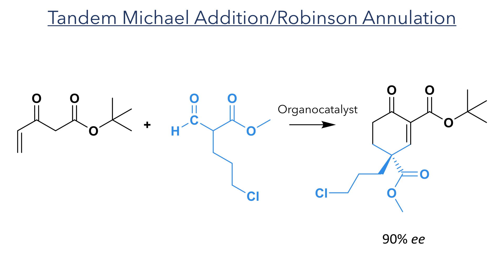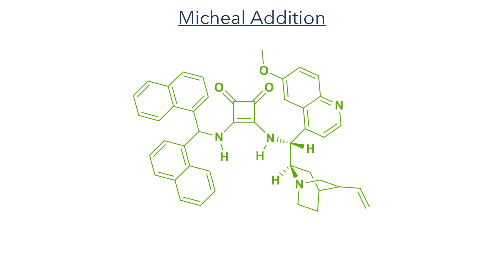The synthesis starts with a tandem Michael addition and Robinson annulation. The product of this reaction is a highly functionalised alpha-beta unsaturated cyclohexanone with the desired stereochemistry in a 90% enantiomeric excess. The high stereoselectivity of this reaction is produced by using an organocatalyst to control the approach of the nucleophile. The catalyst used was a quinine-conjugated squaramide. The chirality of the catalyst arises from the quinine moiety, a naturally occurring molecule produced by the cinchona tree. The tertiary amine can act as a base and as a hydrogen bond acceptor, while the squaramide moiety can act as a strong hydrogen bond donor and activate carbonyl centres. The naphthalene rings can take part in pi-stacking and hydrophobic interactions and help orientate the substrate inside the chiral pocket of the catalyst.